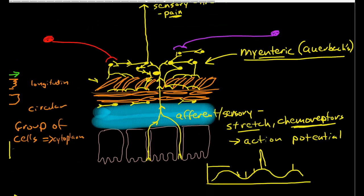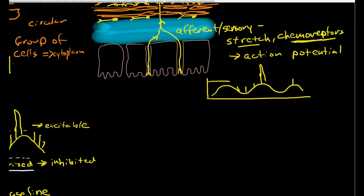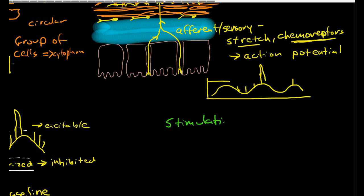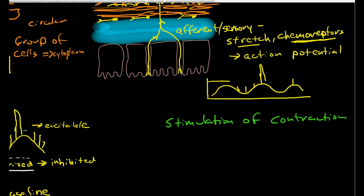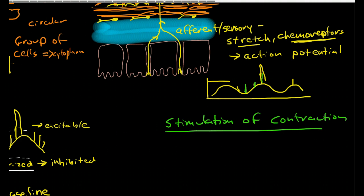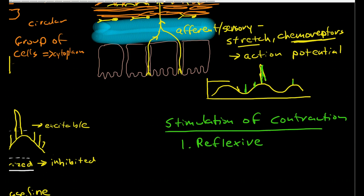There's a few things that can stimulate contraction of the muscle. One is this reflex. I'm talking about spike waves here that may or may not stimulate a contraction depending on the place that it occurs on that slow undulating wave pattern underneath.